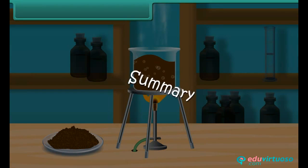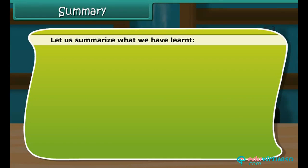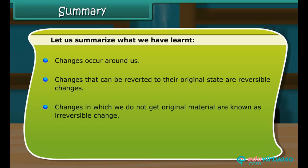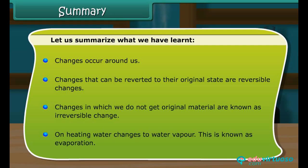Summary. Let us summarise what we have learnt. Changes occur around us. Changes that can be reverted to their original state are reversible changes. Changes in which we do not get the original material are known as irreversible changes. On heating, water changes to water vapour — this is known as evaporation.